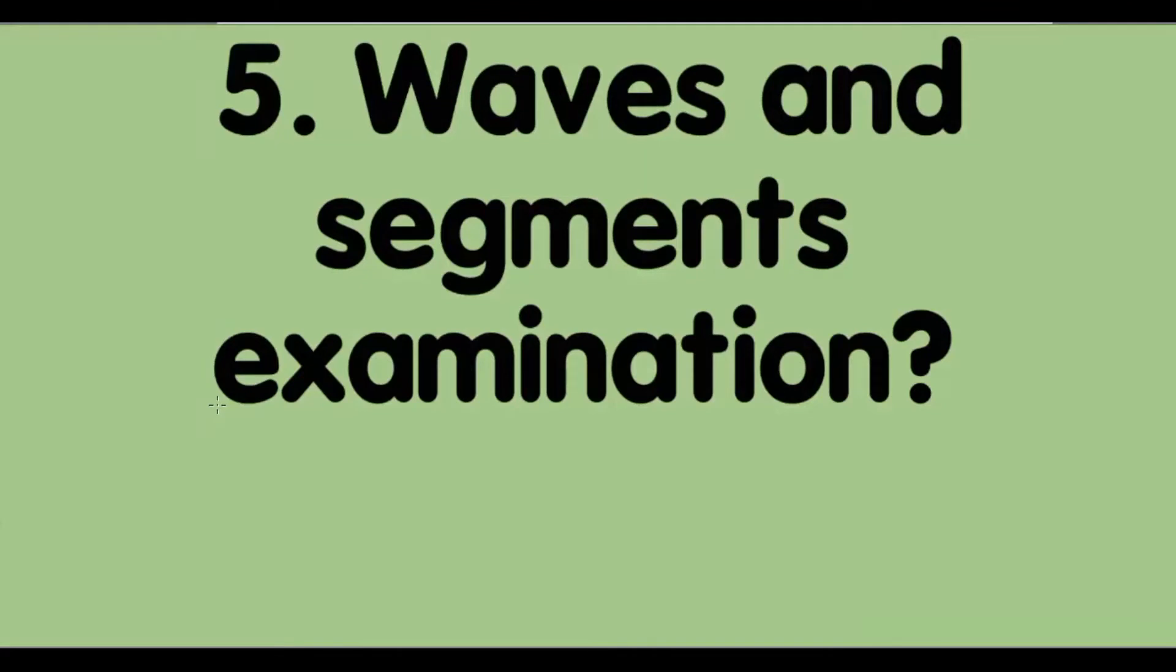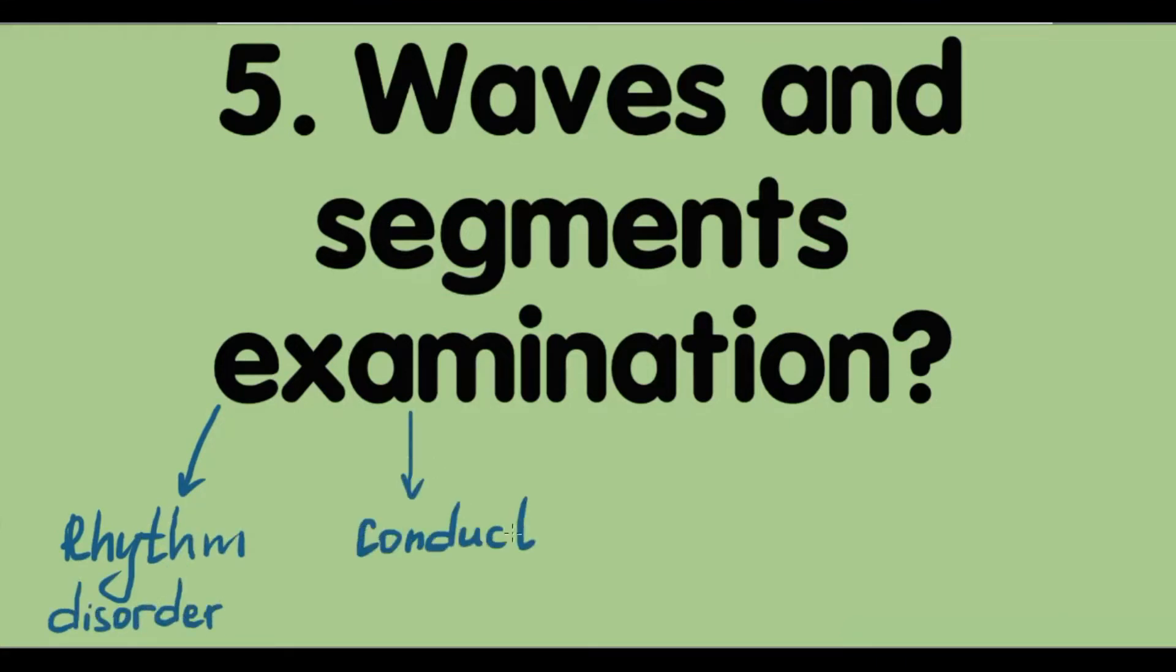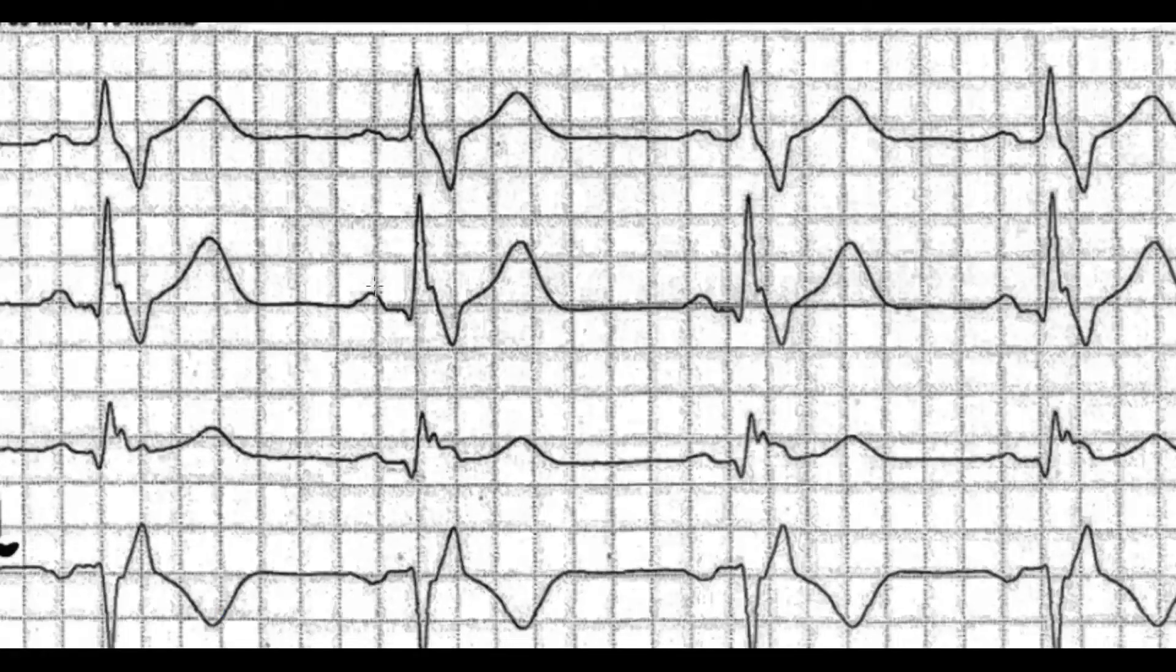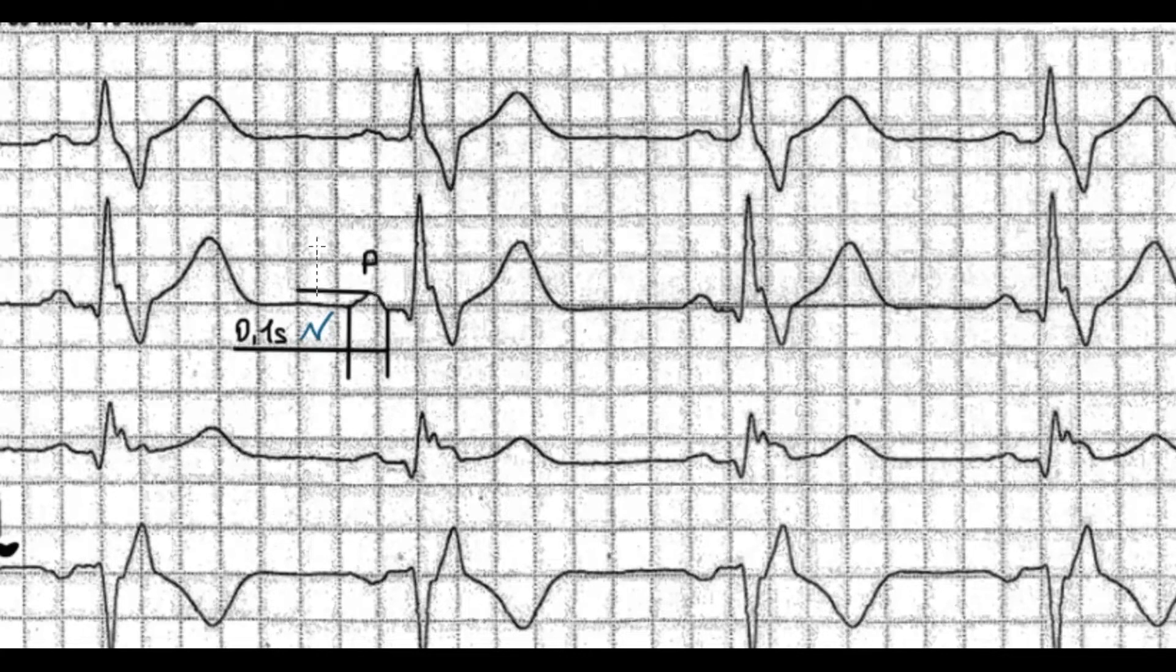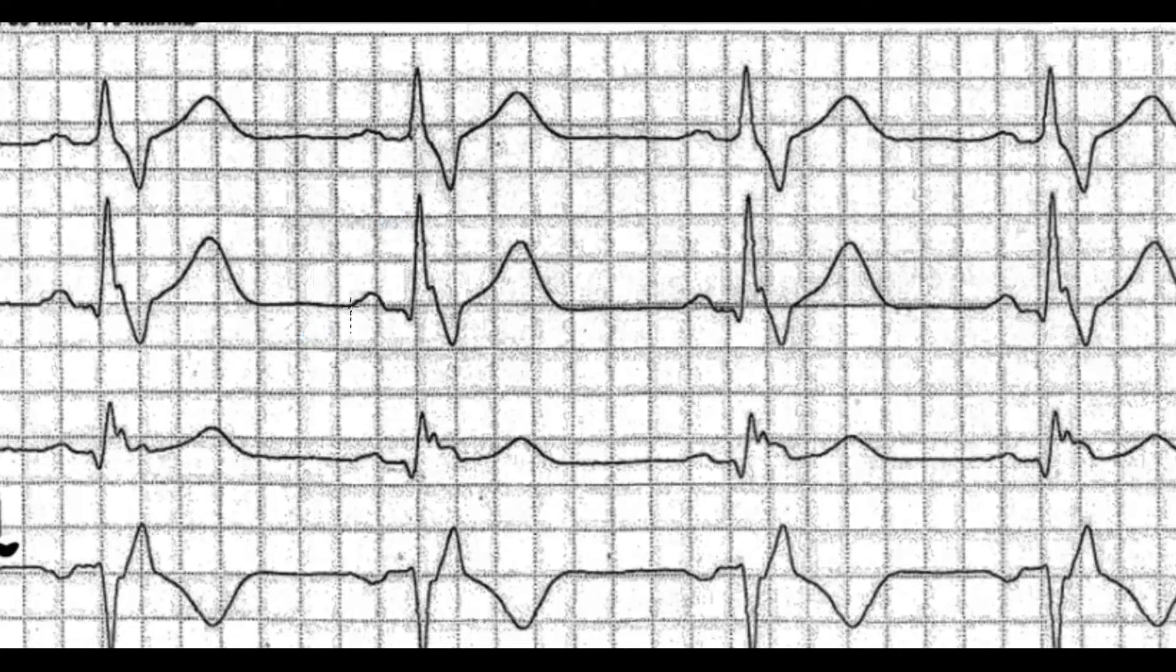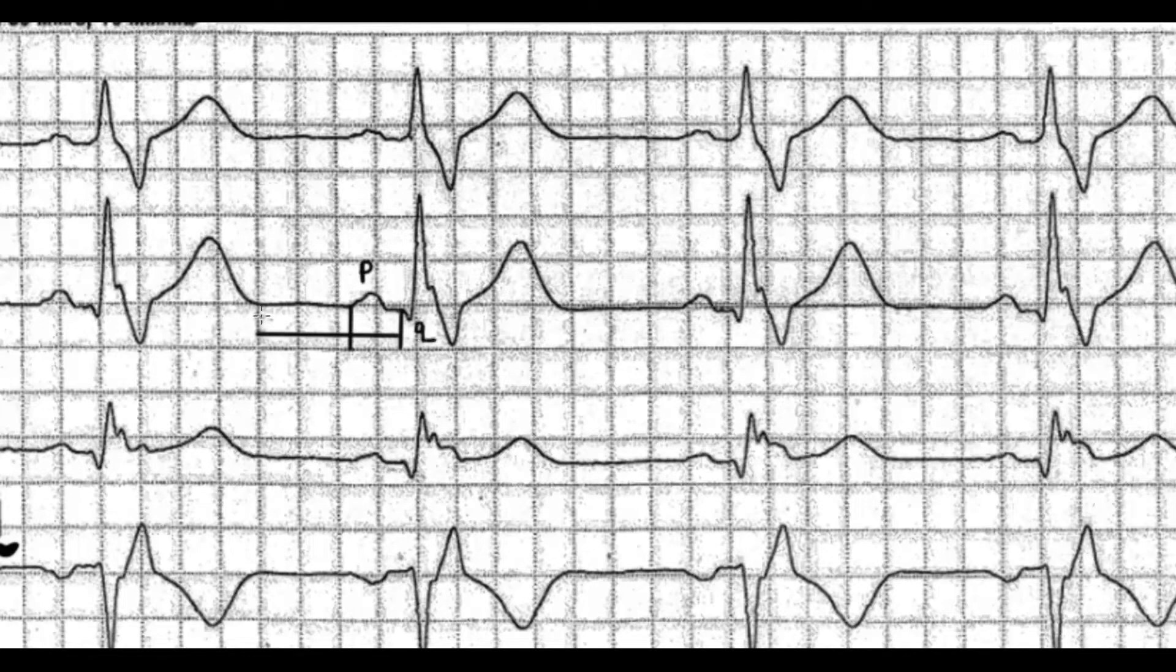After this we check all waves, segments and intervals in the context of 4 main ECG syndromes: heart rhythm disorder, conductivity disorder, hypertrophy and injury. P wave duration is 0.1 seconds which is normal. Amplitude is 2.5 millimeters which is normal too.